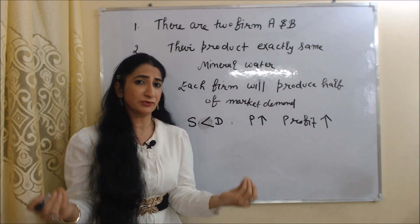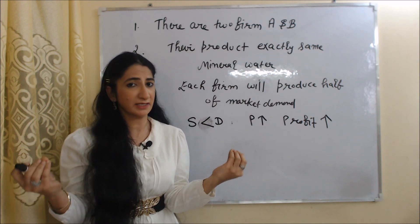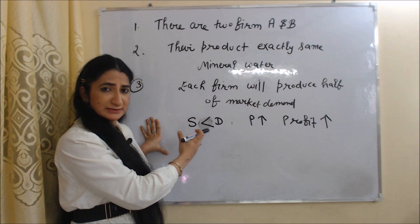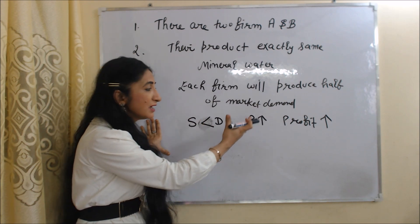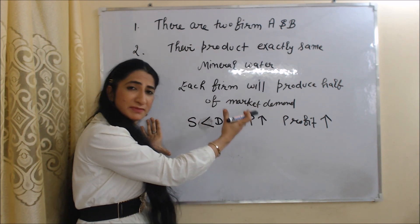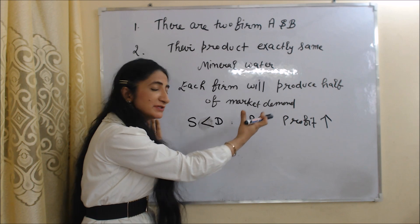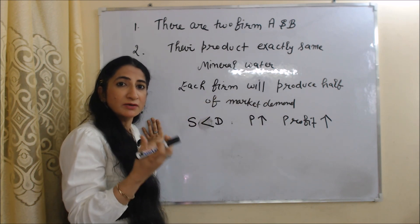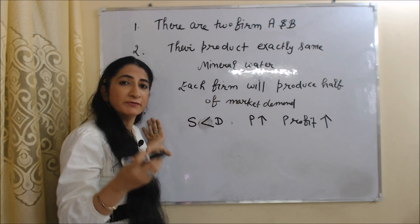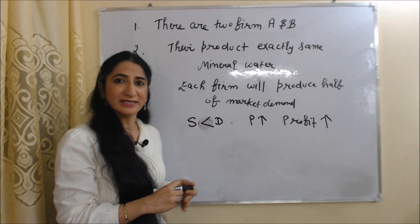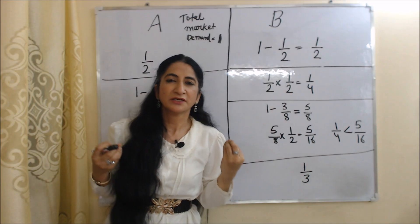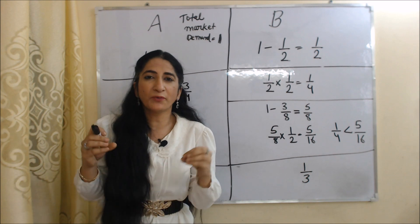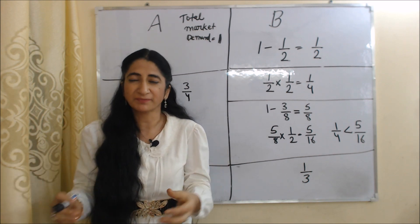But why will a firm produce less than market demand? As we know, if supply is less than demand, price will remain high. If price is high, profit of the firm will be high. So in order to earn more profit, a firm will produce less than market demand.